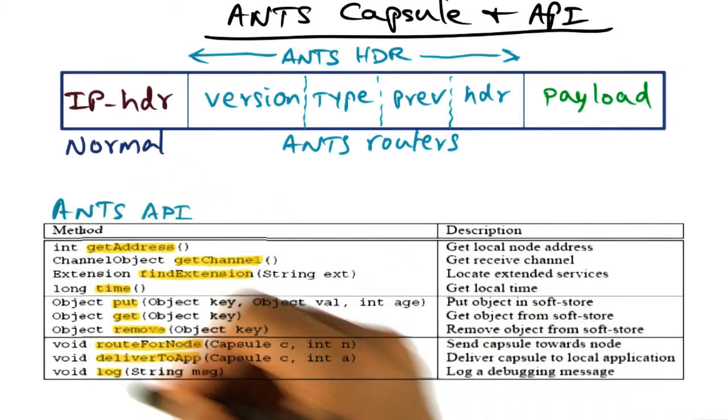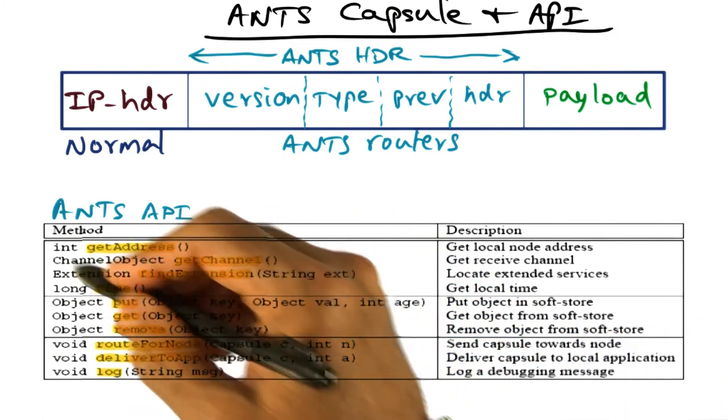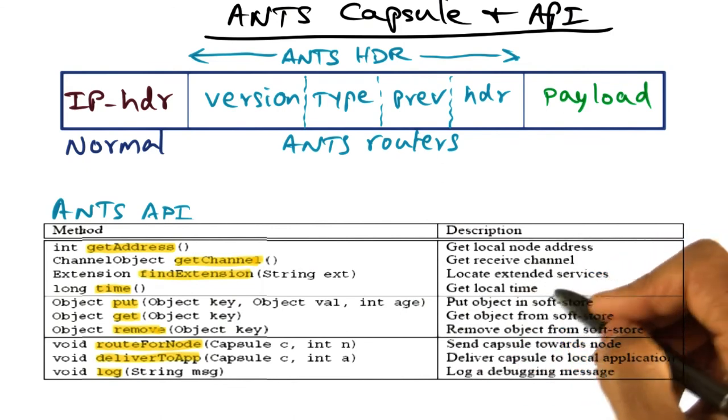So the key thing that I want you to get out of looking at this ANTS API is that it is a very minimal set of API. So the number of API calls fits in this little table here. So that's the idea.